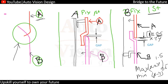Whenever two components are assembled together, a gap is required. This gap is viewed from the Class A surface side of the part. This is how the interface needs to be developed, depending upon the assembly sequence of the parts.